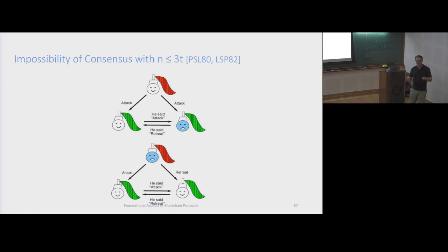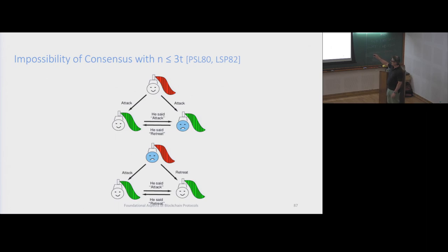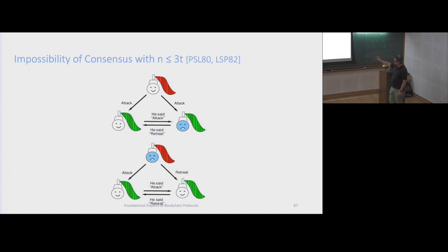These guys are going to compare notes. The honest guy is going to say the boss said we have to attack, and the corrupt guy says we have to retreat. This scenario is indistinguishable from this guy's point of view from the scenario where now the sender is corrupt and sends attack and retreat to different parties. From this guy's point of view, to not violate validity, he has to attack. And symmetrically, from the other point of view, this guy has to retreat. So there is disagreement, and that's because n is less than or equal to 3t.